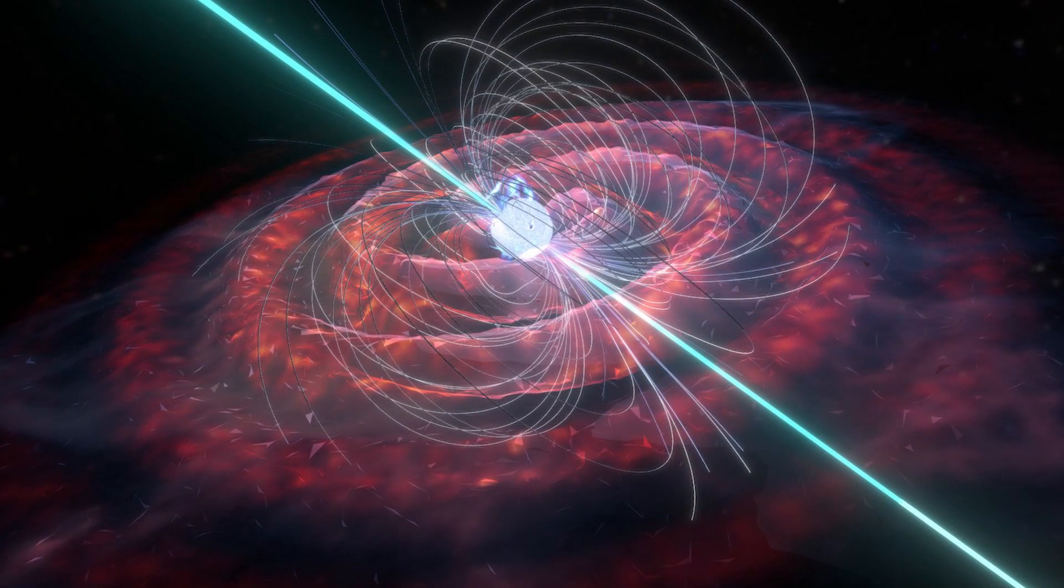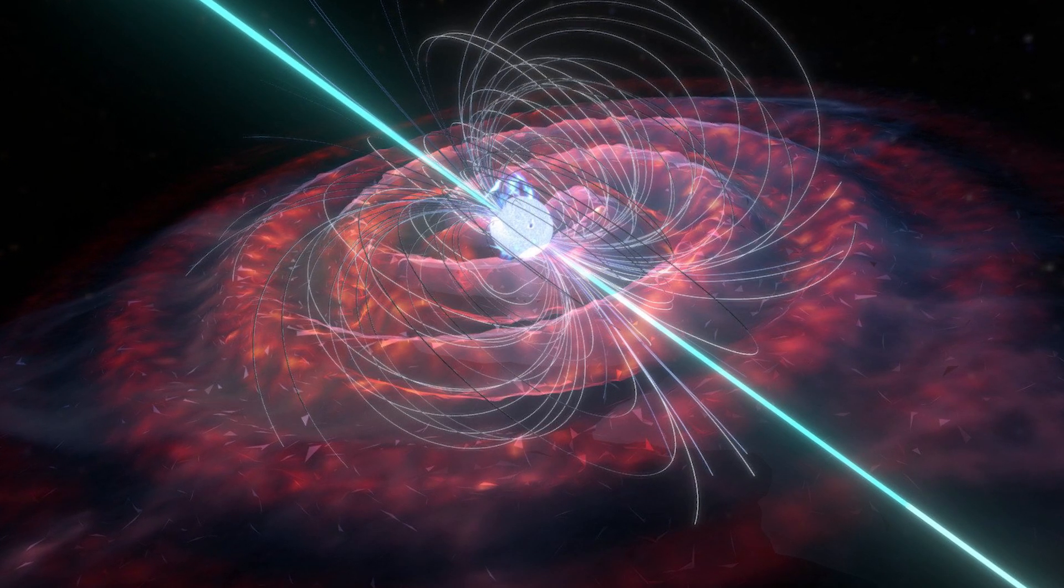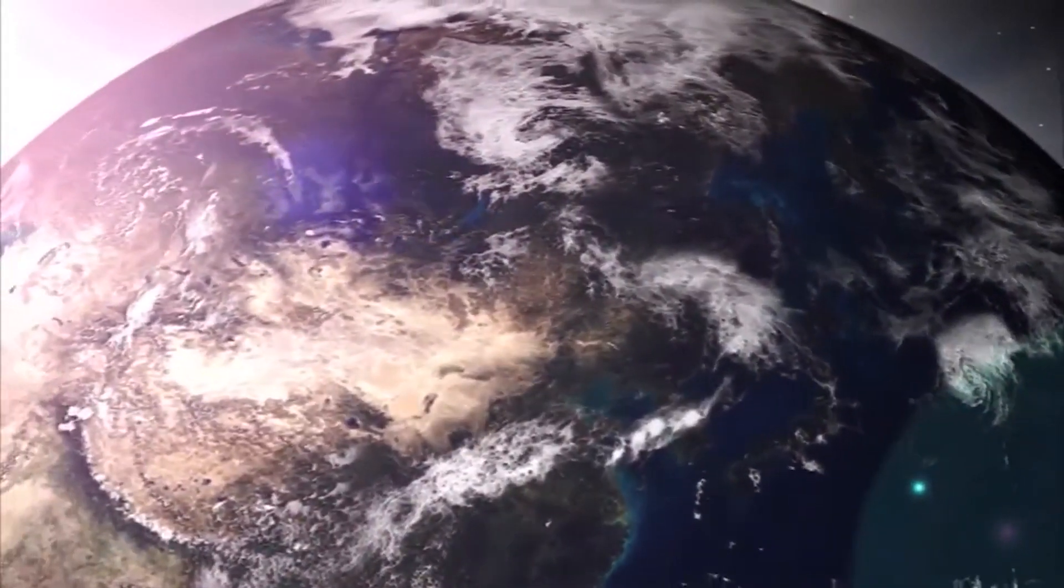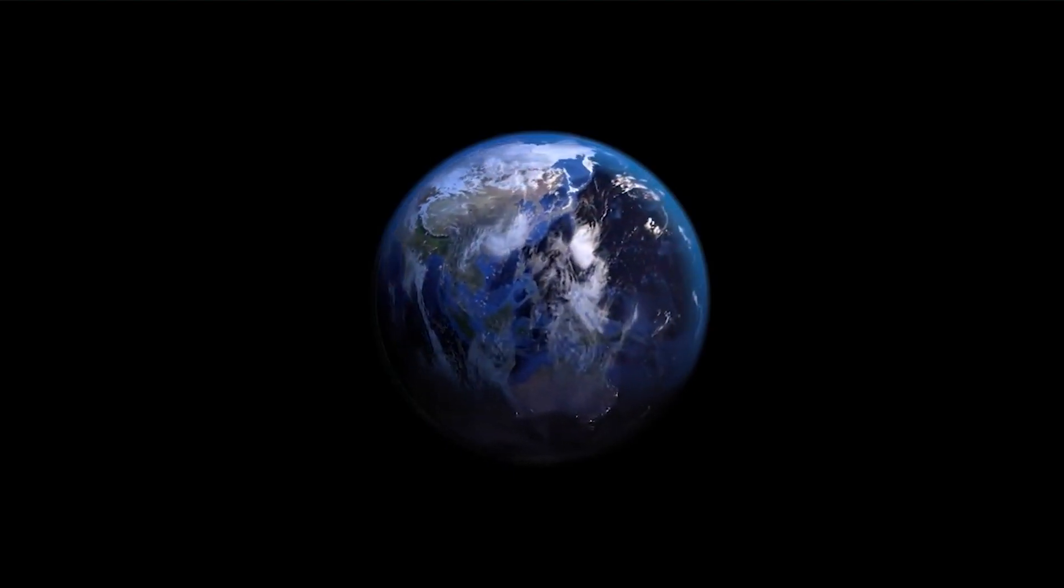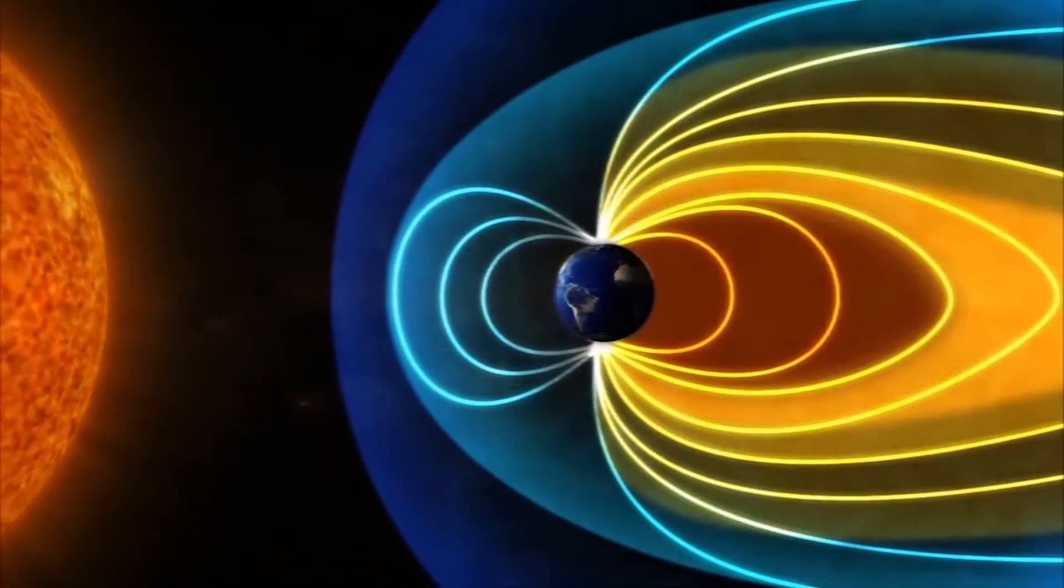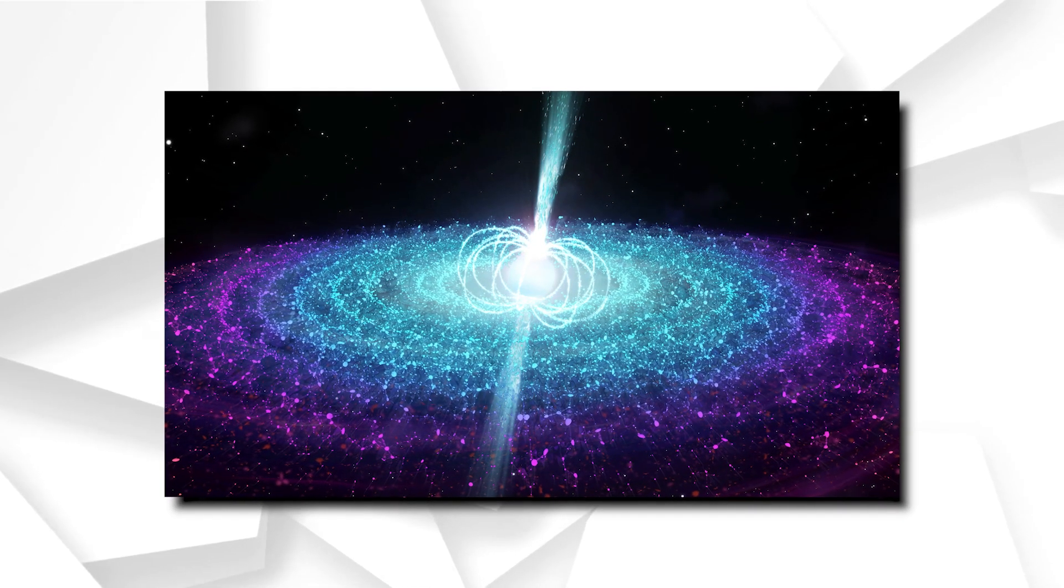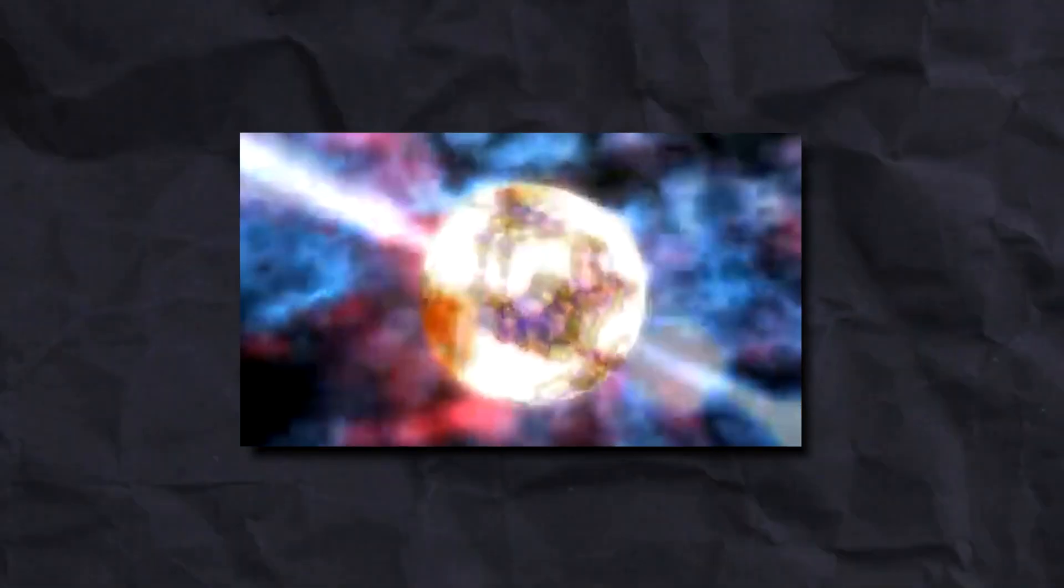A pulsar is a highly magnetized rotating neutron star that emits beams of electromagnetic radiation out of its magnetic poles. This radiation can be observed only when a beam of emissions is pointing toward the Earth, similar to a rotating beacon on an ambulance, and is responsible for the pulsed appearance of emission. Neutron stars are very dense and have short, regular rotational cycles. This produces a very precise interval between pulses that ranges from milliseconds to seconds for an individual pulsar.